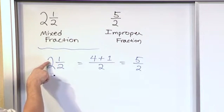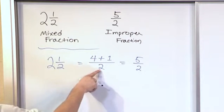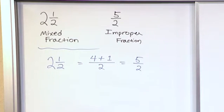You take the bottom number times the big number and then you add the top. So you have four plus one and then the bottom number stays exactly the same.